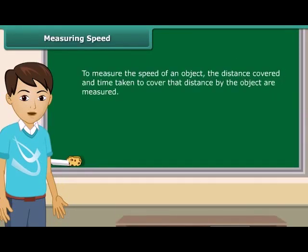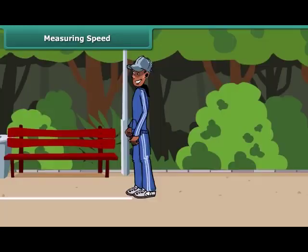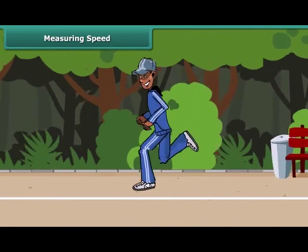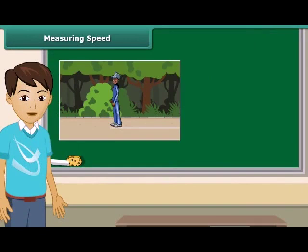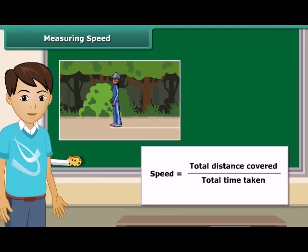To measure the speed of an object, we measure the distance covered and time taken to cover that distance by the object. After that, we apply formula of speed. Let us learn to measure speed with this simple exercise. Draw a line. Ask a friend of yours to stand on the line. Allow him to run till he wants to stop. Note the total time taken from the moment he started to the moment when he stopped. Measure the distance covered by your friend. Now divide the distance covered by the time taken to cover the distance. What you have calculated is the running speed of your friend.